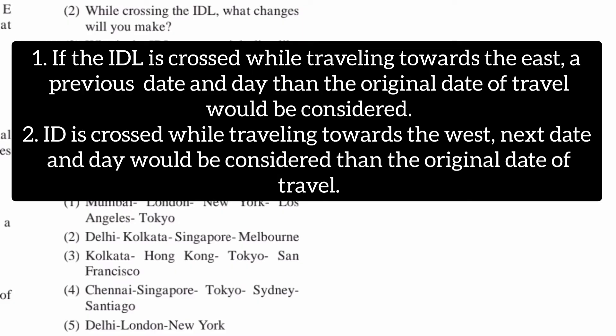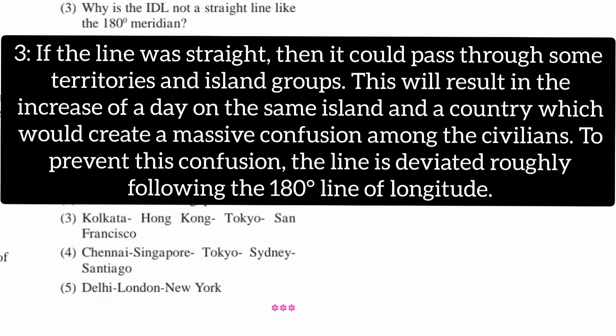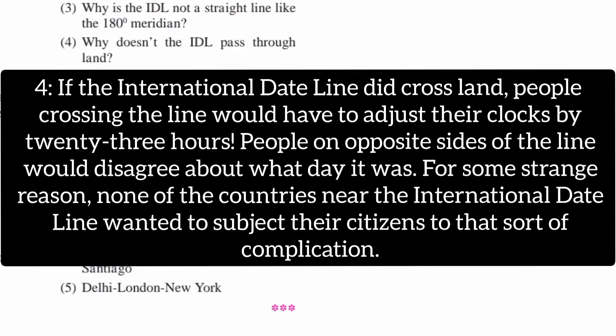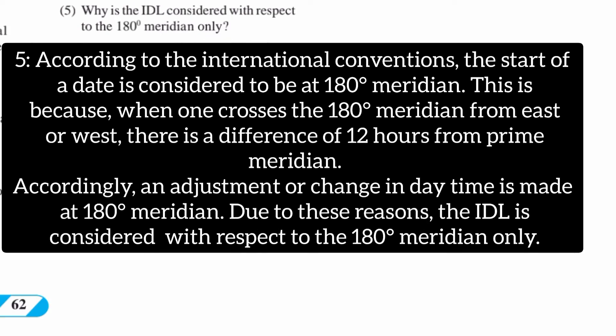Next, question 4 second: while crossing the dateline, what changes will you make? Third: why is the dateline not a straight line like the 180 degree meridian? Fourth: why doesn't the dateline pass through land? Fifth: why is the dateline considered with respect to the 180 degree meridian only?